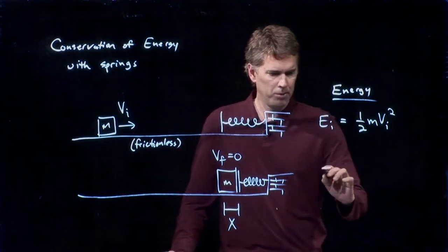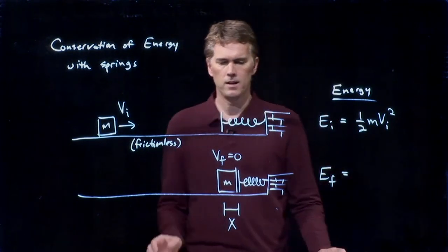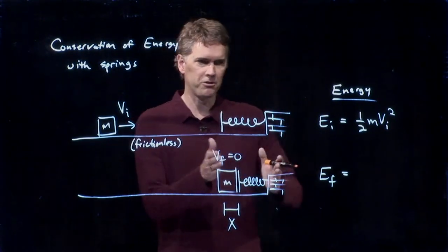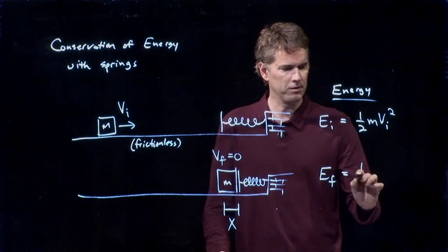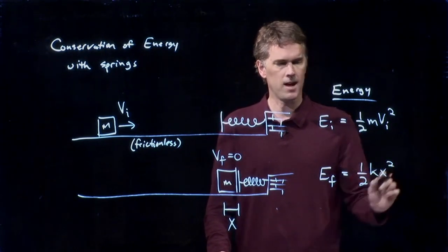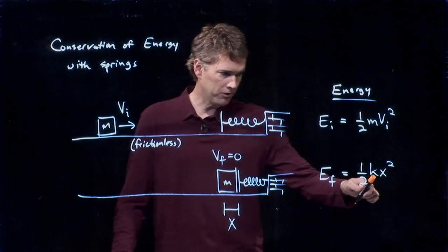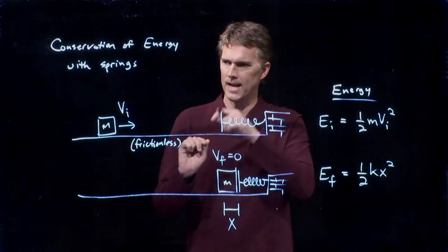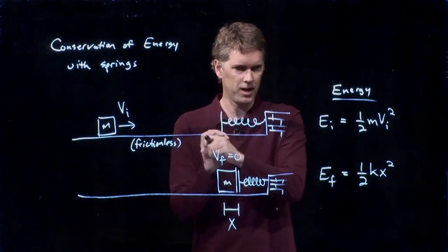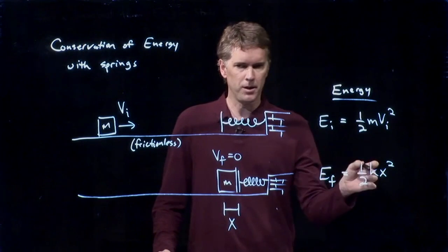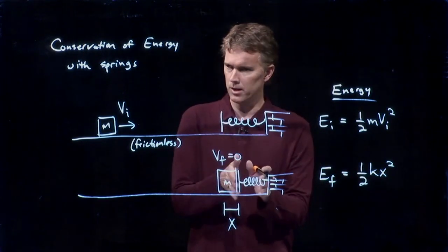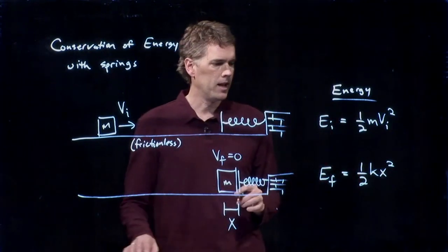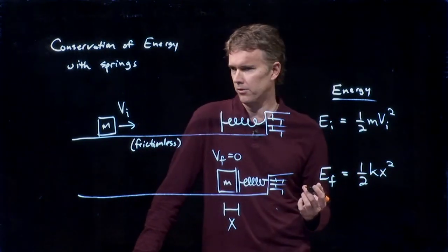In the final picture, the block has come to rest. There's no kinetic energy in the block anymore, but the spring has compressed. It compressed a distance x. K is the spring constant for that particular spring. It depends on the material. It depends on how tightly it's wound. It depends on how thick the material is. It is dependent on the particular spring that you're using. But x is how far it gets compressed. And let's say now that we're trying to solve this thing for x.